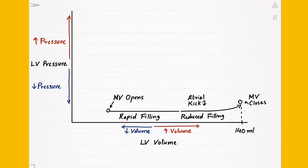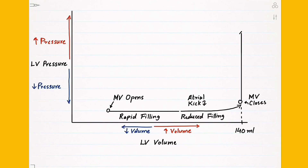After the mitral valve closes, the ventricle starts contracting but there is no change in volume because blood is not leaving the left ventricle yet since the aortic valve is still closed. Only the pressure inside the left ventricle is increasing, so the graph moves straight up along the y-axis. This phase is called isovolumetric contraction — there is no change in volume because the ventricle is not pushing out any blood.